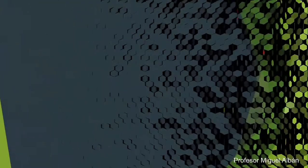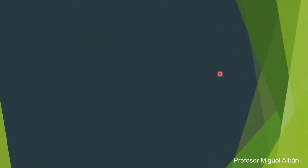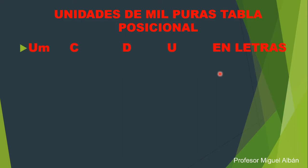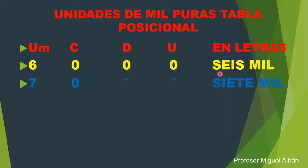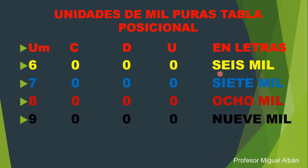Continuamos con las unidades puras de mil. Quedamos en cinco mil. Seguimos: seis mil (6.000), siete mil (7.000), ocho mil (8.000), y terminamos con nueve mil (9.000) en números y letras. Recuerde que estamos trabajando con la página 18.